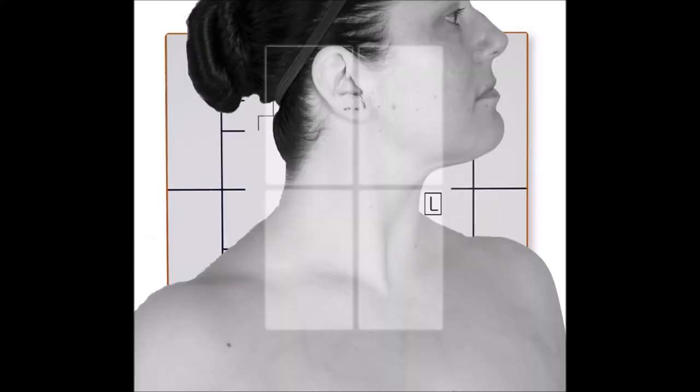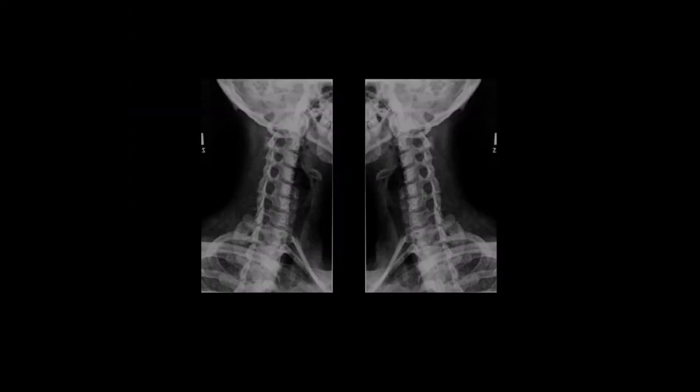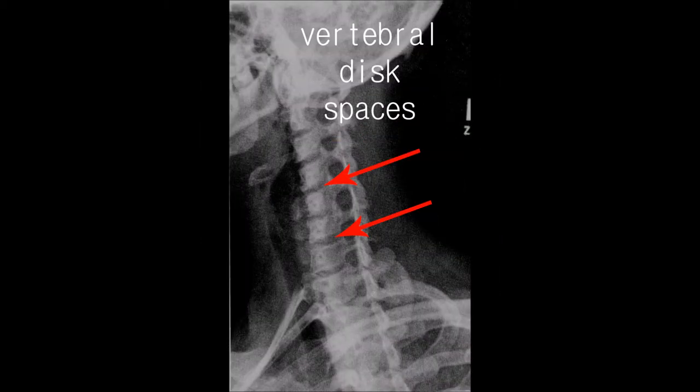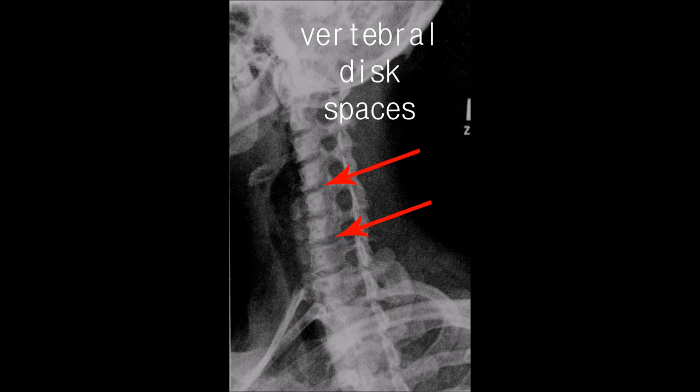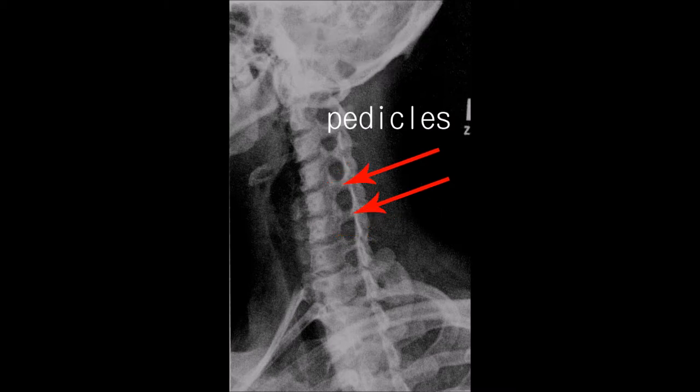Collimate both to include the EAM, the soft tissue margins of the neck, and the T2-T3 joint. Both right and left obliques should be taken for comparison. The intervertebral foramina, the vertebral disc spaces, should be open and uniform while the pedicles are in full profile.